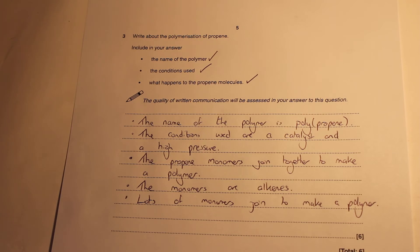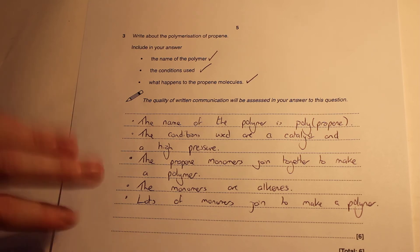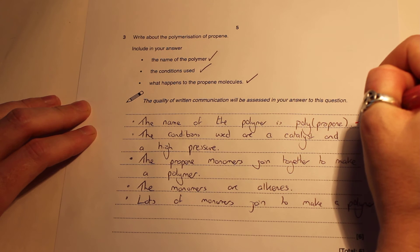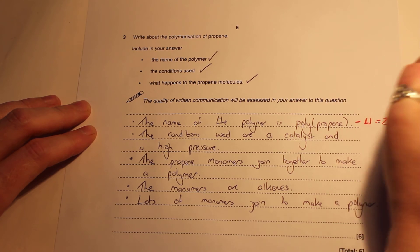To get your level one answer, which gets you up to two marks, we need to come up with the name, name a condition, or give a very basic description of polymerization. Any of those three things—just saying catalyst or high pressure or the name is polypropene or giving a very basic description—gets you two marks.